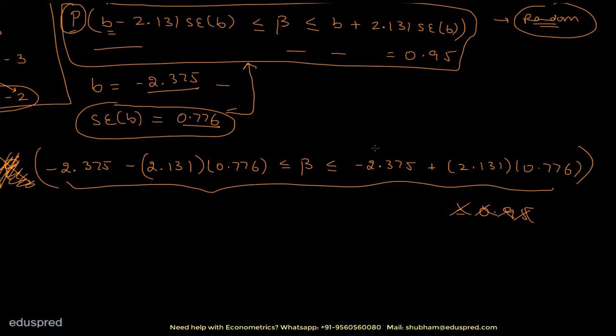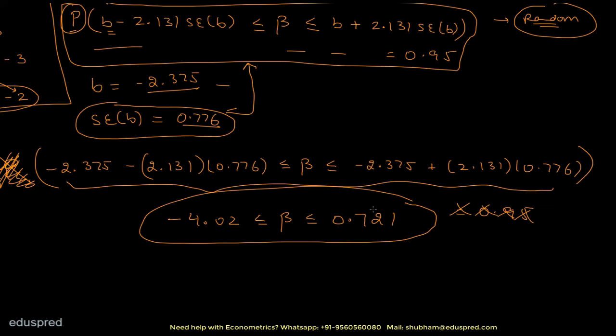Solving the expression gives −4.02 ≤ β ≤ 0.721. This is your 95% confidence interval for beta.